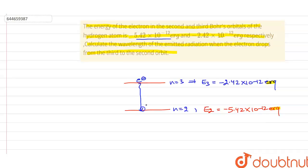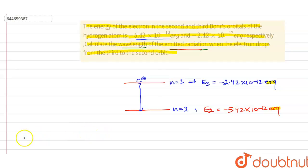When the electron falls from n=3 to n=2, radiation in the form of energy is emitted. We have to find the wavelength of that emitted radiation.